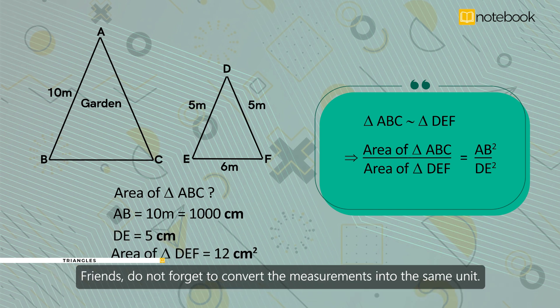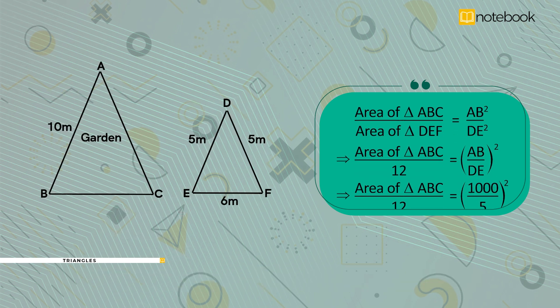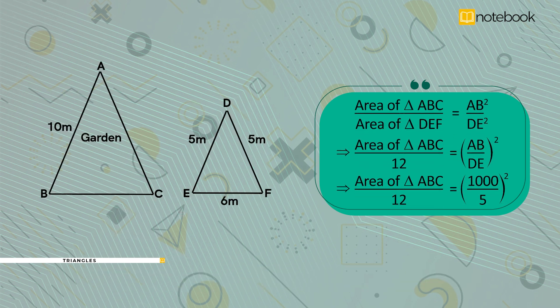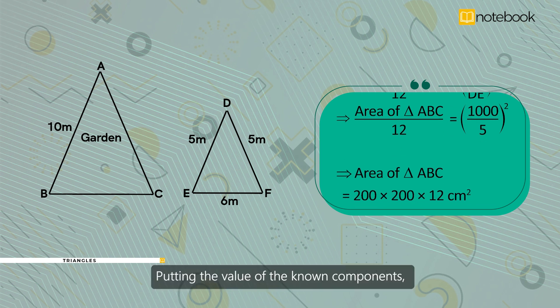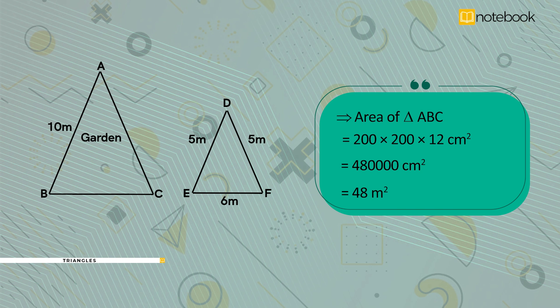Friends, do not forget to convert the measurements into the same unit. Now, area of triangle ABC by area of triangle DEF is equal to AB square by DE square, putting the value of the known components.